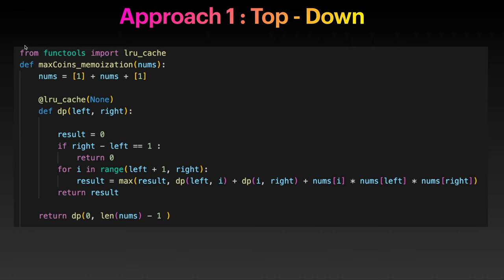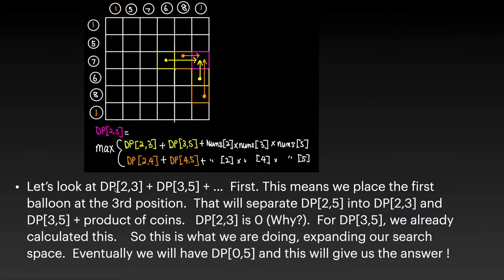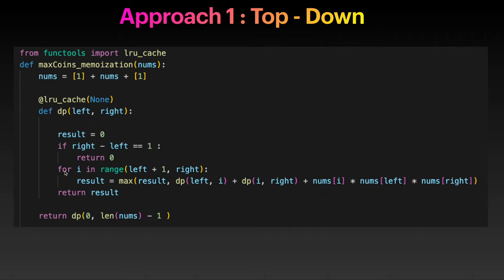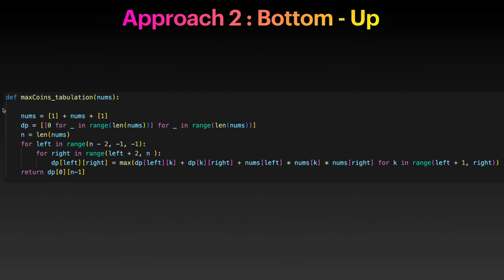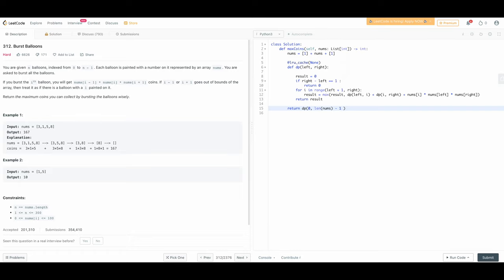I'm using Python. For the top-down approach: if right - left == 1, return 0 — that's the base case like dp[2][3] = 0. Then you perform the recursion and return the result. I prefer the bottom-up approach because it's visually pleasing and helps me understand the problem. You create an initialized dp matrix with all entries zero, fill out the entire matrix, and return dp[0][n]. Let's look at the top-down code and run it.